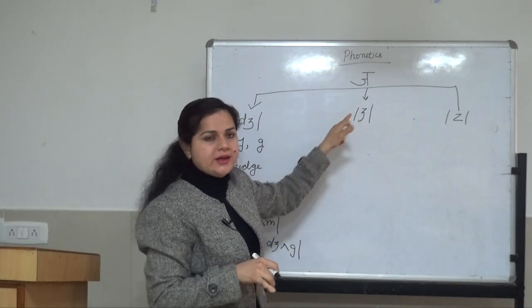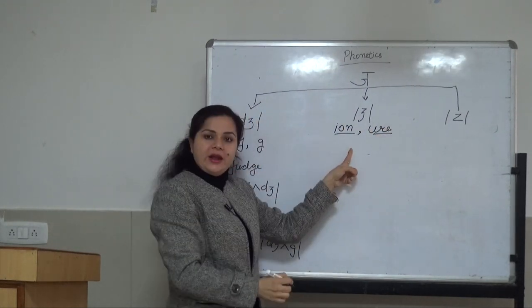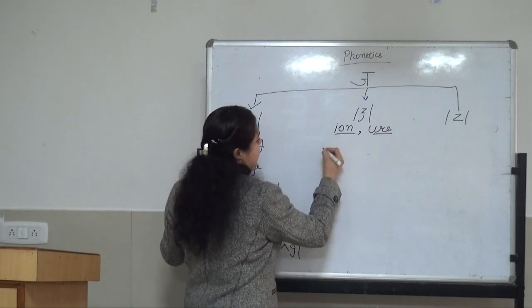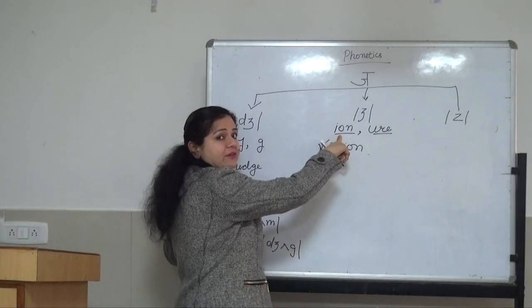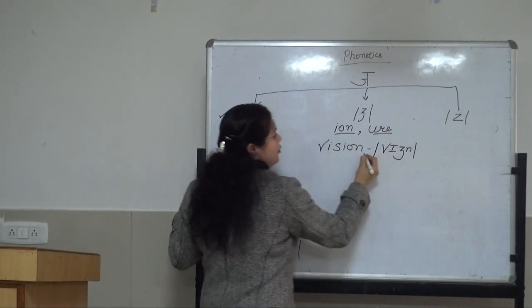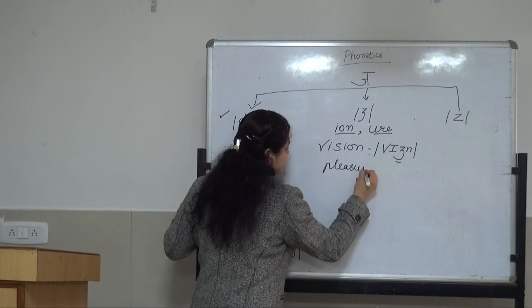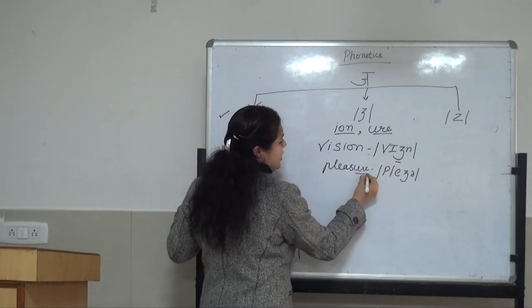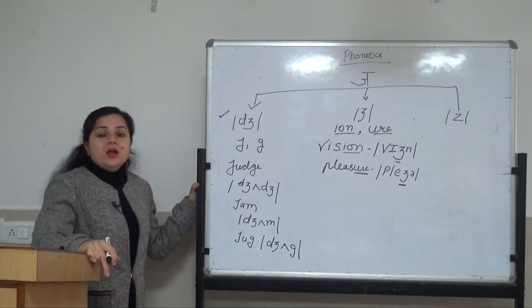If the sound of /dʒ/ is there but in the spelling we are having I, O, N, U, R, E — for example 'vision' — we would use this kind of symbol. Sound of /dʒ/ is there, but in spelling we are having I-O-N. So I would say: /vɪʒn/ — 'vision.' Next example: 'pleasure' — /dʒ/ sound is there but in spelling we have U-R, so we use this kind of symbol.